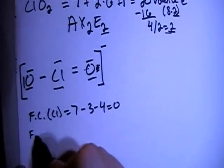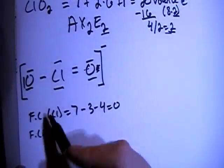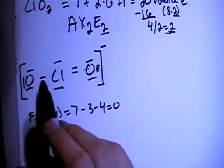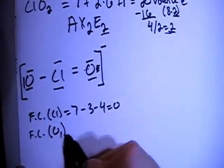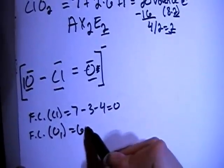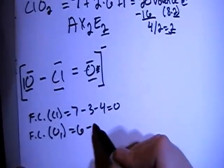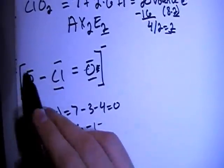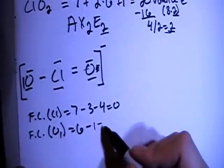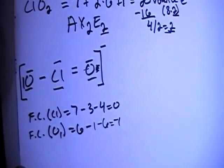And now we can calculate the formal charge of oxygen with 1 bond, single bond, right here. So O sub 1, that's 6 valence brought in, minus 1 bond, minus the 1, 2, 3, 4, 5, 6 non-bonding electrons, which gives us a minus 1 charge overall.